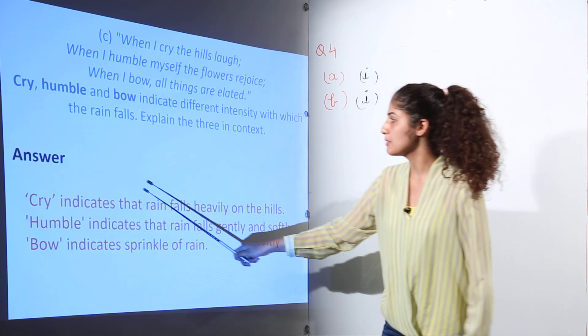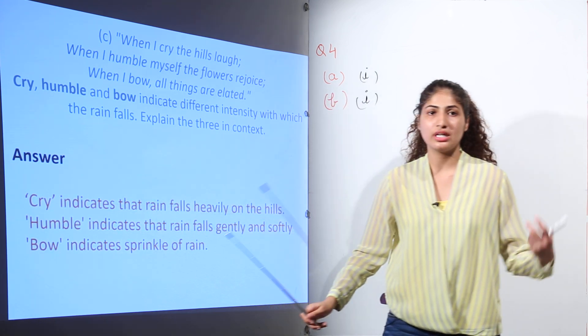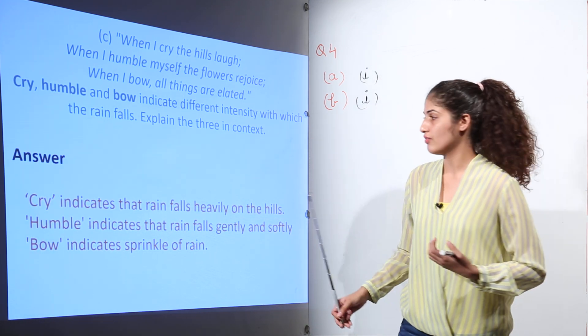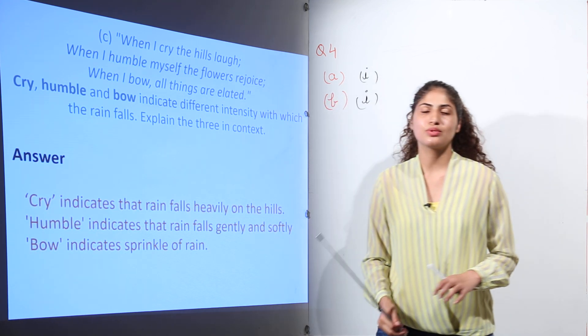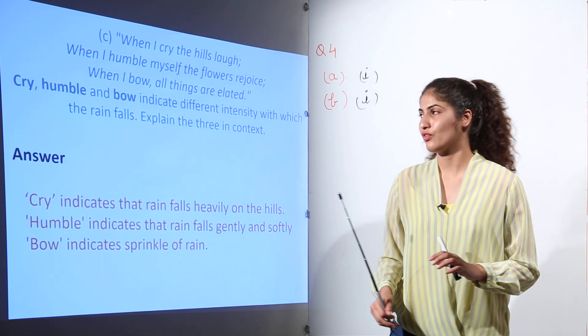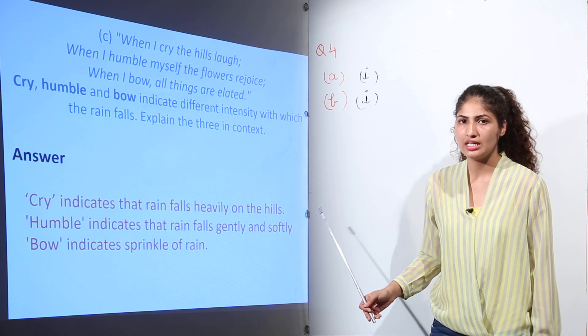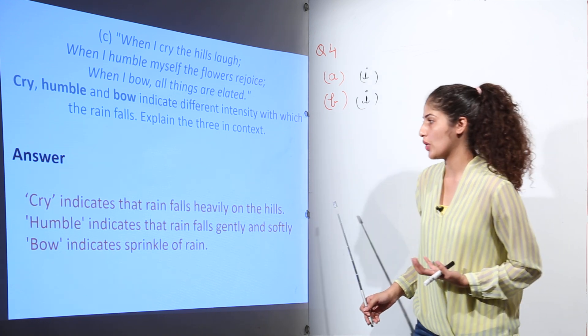Cry refers to the heavier rainfall. Humble refers to the soft and gentle rainfall. And bow refers to the sprinkling of the rainfall. So it is saying that when it falls heavily on the hills, then hills are rejoicing.